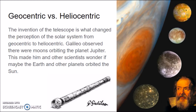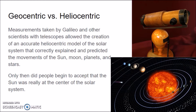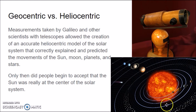It made people start to question. Measurements taken by Galileo and other scientists with telescopes allowed the creation of an accurate heliocentric model that correctly explained and predicted the movements of the Sun, the Moon, the planets, and the stars. Galileo and other scientists, including Isaac Newton, observed the planets with telescopes and were able to create this heliocentric model. Their model correctly predicted when they would see the different planets, the Moon, and the stars, and so people began to accept that the Sun was really at the center of the solar system.